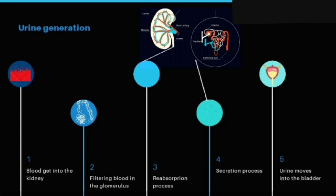We can say that urine generation involves three processes: filtration, reabsorption, and secretion. First, the blood will go into the kidney and will be filtered. Then, reabsorption means that important substances and water will be reabsorbed into the capillaries. Next, in the secretion process, material from the capillaries will be transferred into the renal tubule. They will produce urine that will be accommodated by the bladder.